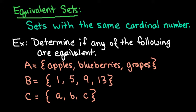The elements inside of the set do not have to be the same. If all of the elements inside of the set are the same, that means that they are equal sets, and equal sets are different than equivalent sets. So equivalent sets, they just have to have the same cardinal number.